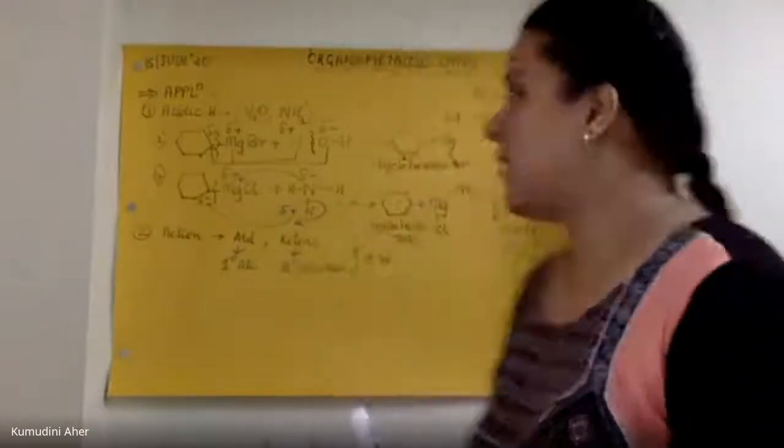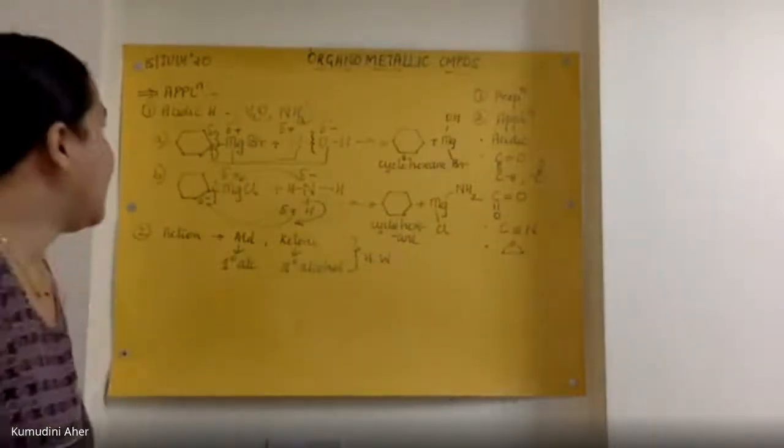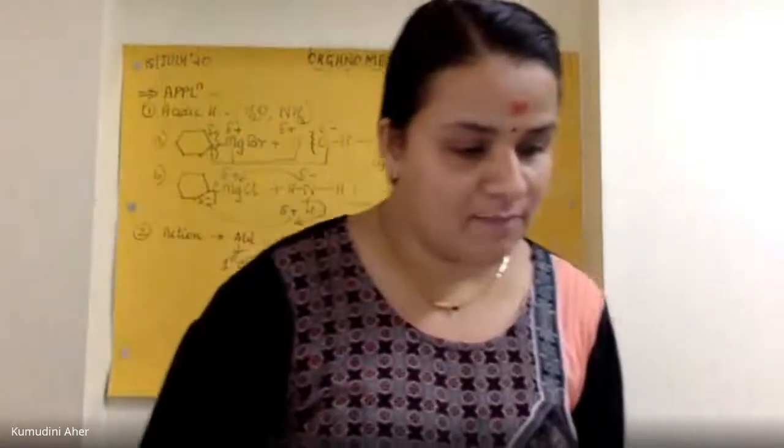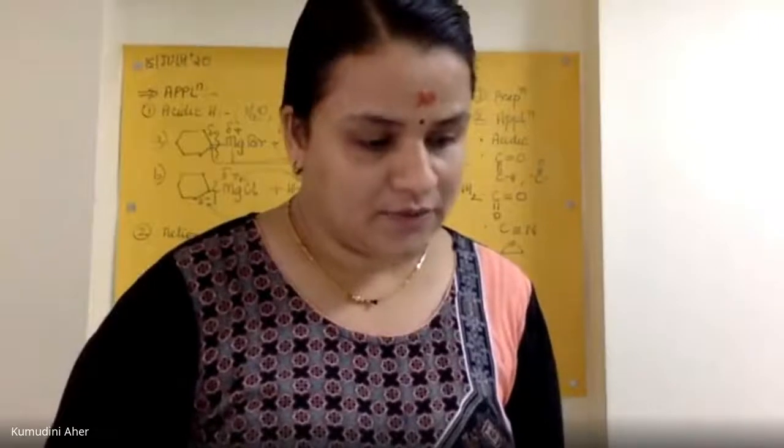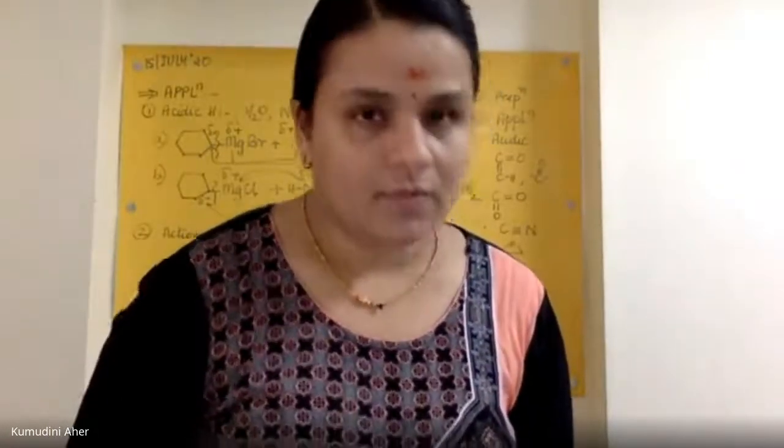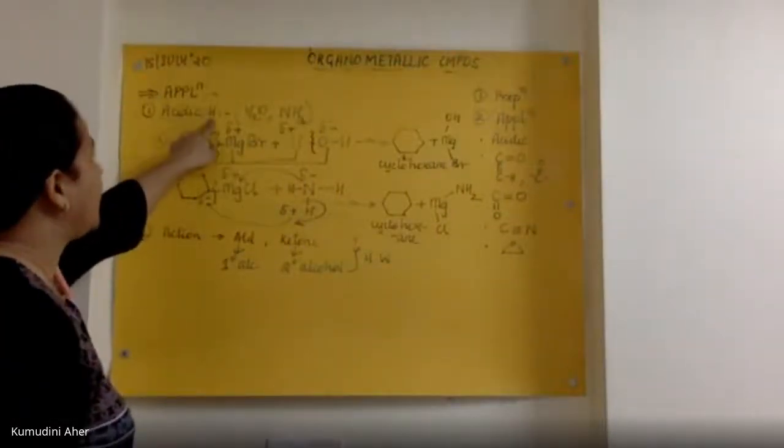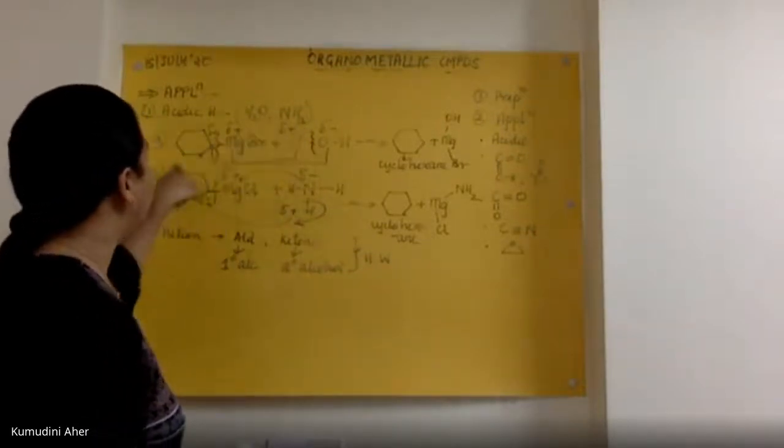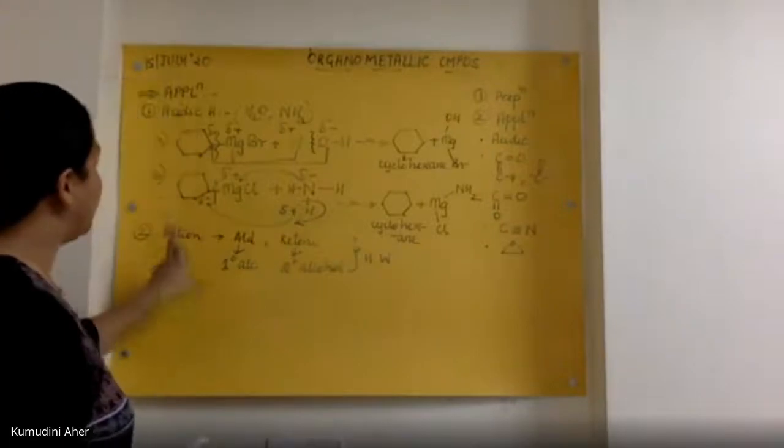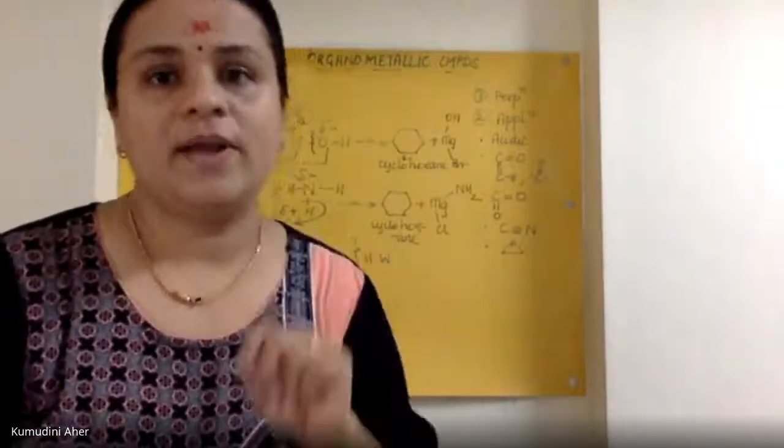Take down the question now. Write a short note on application of organometallic compounds. First you will be writing application of acidic hydrogen. Acidic hydrogen has two parts - water and ammonia. First reaction I have shown with water molecule. Second reaction I have shown with ammonia. Second part of the application is action on aldehydes and ketones. This you will be doing as homework. Please take down what is on the board.